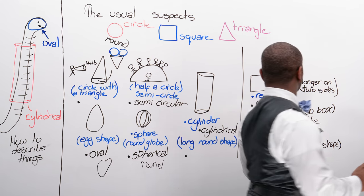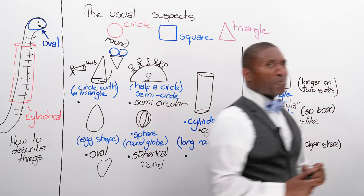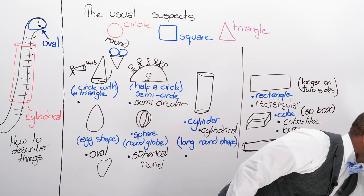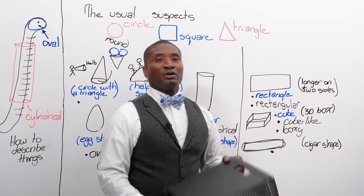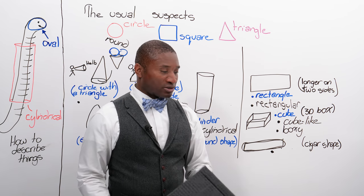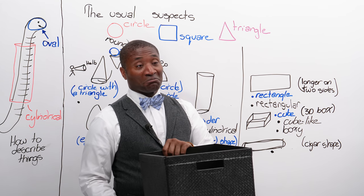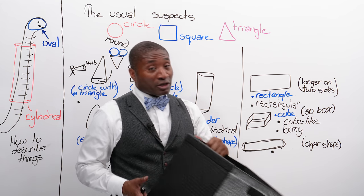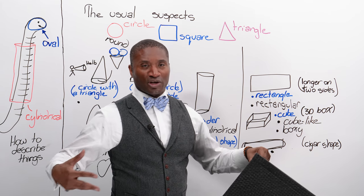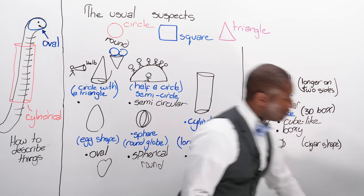We could also say something is boxy. If I ask my friend, 'Mr. E, can you get that boxy thing over there?' — you give me this. It's because it looks like a box, and a box happens to be usually cube-like or a cube. Sometimes we talk about cars being boxy, or a sweater being boxy — it has that kind of big volume to it that's not really defined.